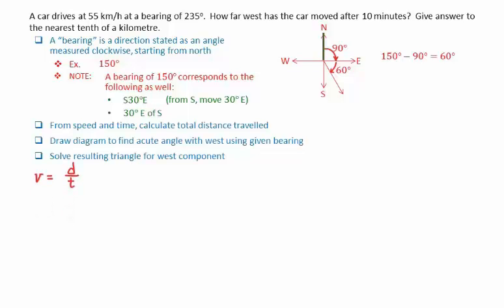First of all, the formula for speed is equal to distance divided by time. We can rearrange this formula as distance equals speed times time.